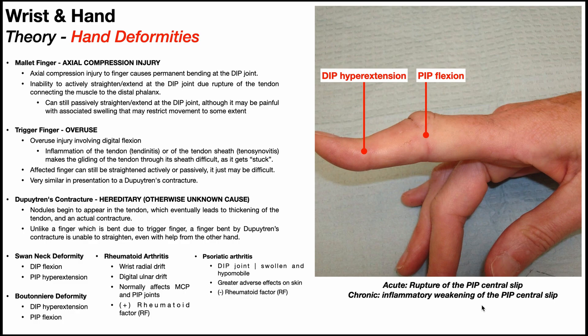The Boutonniè re deformity is caused by damage to the PIP central slip. For an acute case, a rupture of that structure causes the deformity. But you can also have chronic inflammation associated with autoimmune diseases like rheumatoid arthritis, where progressive weakening of the PIP central slip eventually forms this Boutonniè re deformity. Both of these deformities can be associated with autoimmune diseases.